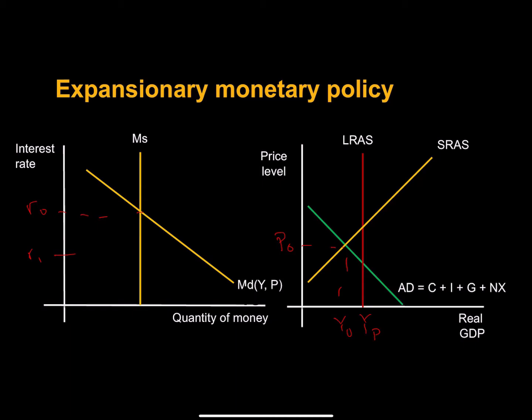With a lower level of interest, we should see an expansion in consumption and investment. And to achieve this lower rate of interest, the central bank or Federal Reserve is going to use its tools to expand the money supply.